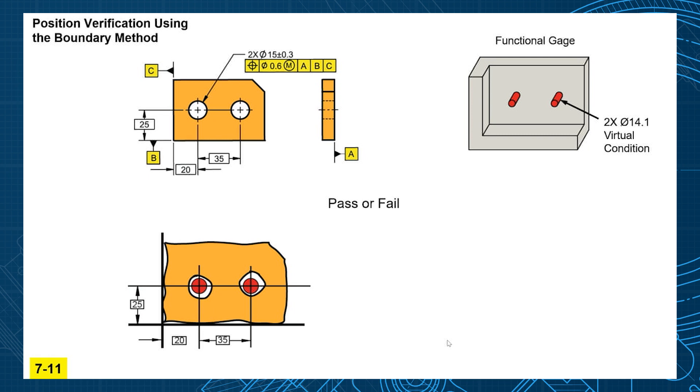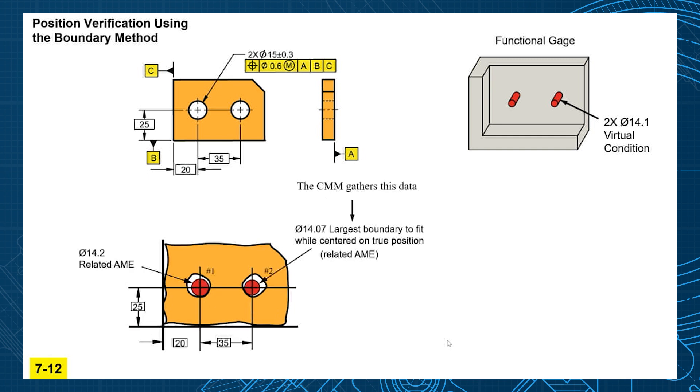So we can use this boundary method for evaluating position even using a CMM. So a CMM would align to the datum reference frame on our imperfect part, and then it would expand our gauge pin, theoretically, an actual mating envelope at the true position. So the CMM would move the basic address of 20 and 25 and expand the biggest envelope until it hits part of the surface, and that comes in at 14.2.